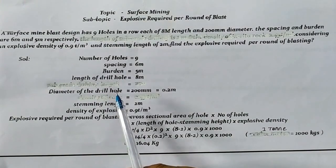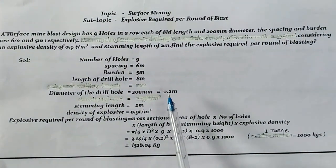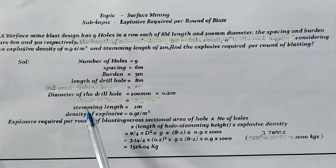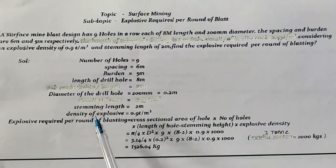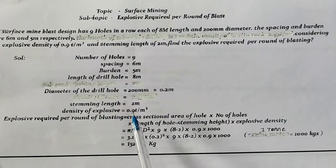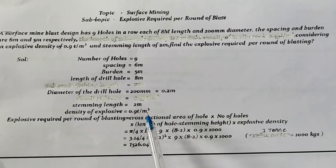Diameter of the drill hole is 200mm or 0.2 meters. Stemming length is 2 meters. Density of explosive is 0.9 tons per meter cube.